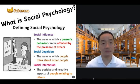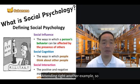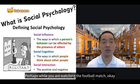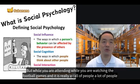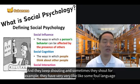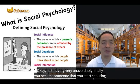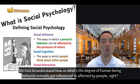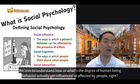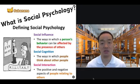You are influenced by someone else's behavior. Another example: perhaps while you are watching a football match, at the beginning you are a quiet or introverted person, but while watching the game with a lot of people who keep shouting — sometimes even using foul language — you unavoidably end up becoming someone who starts shouting too. This is social influence. In social psychology, we love to understand how and to what degree human behavior actually gets influenced or affected by others.